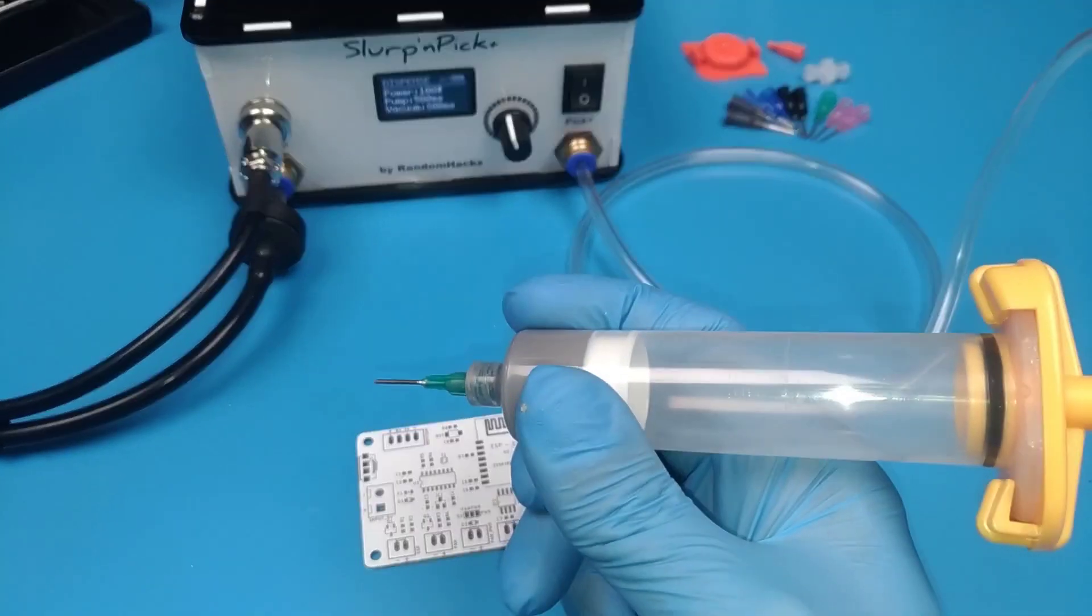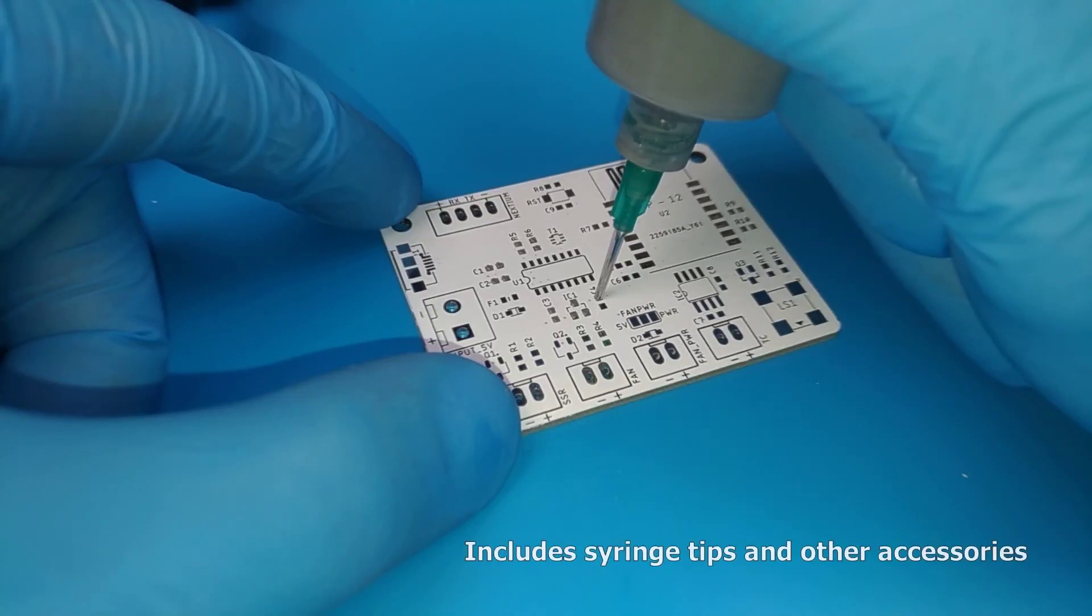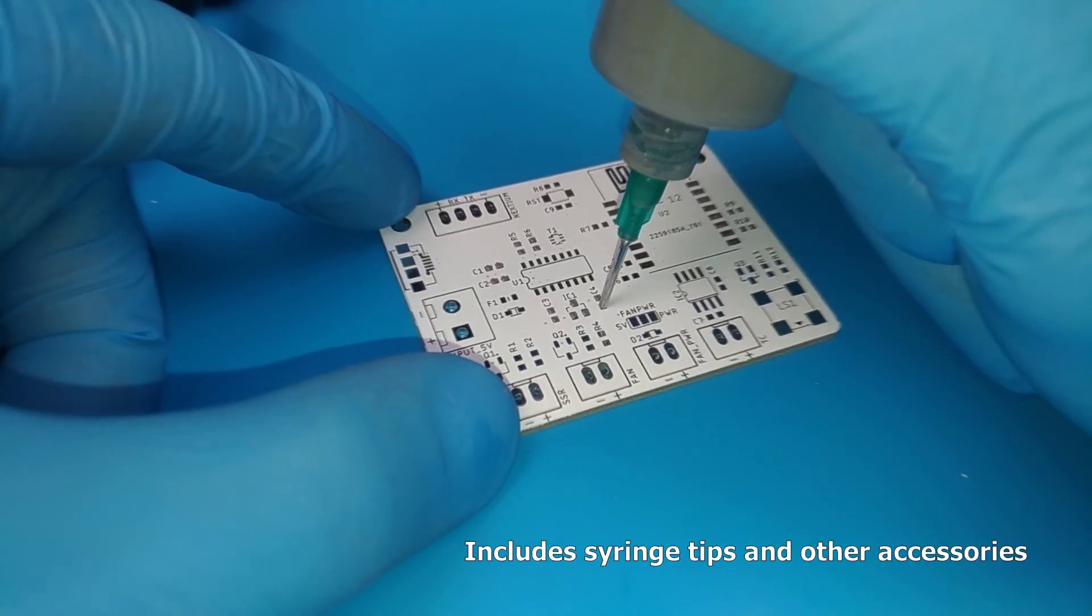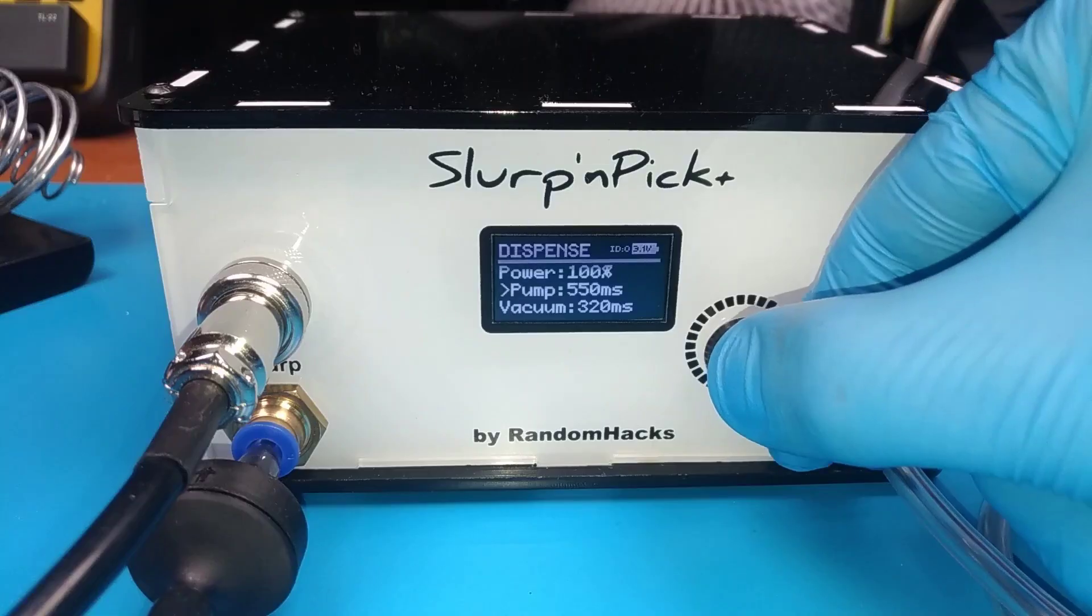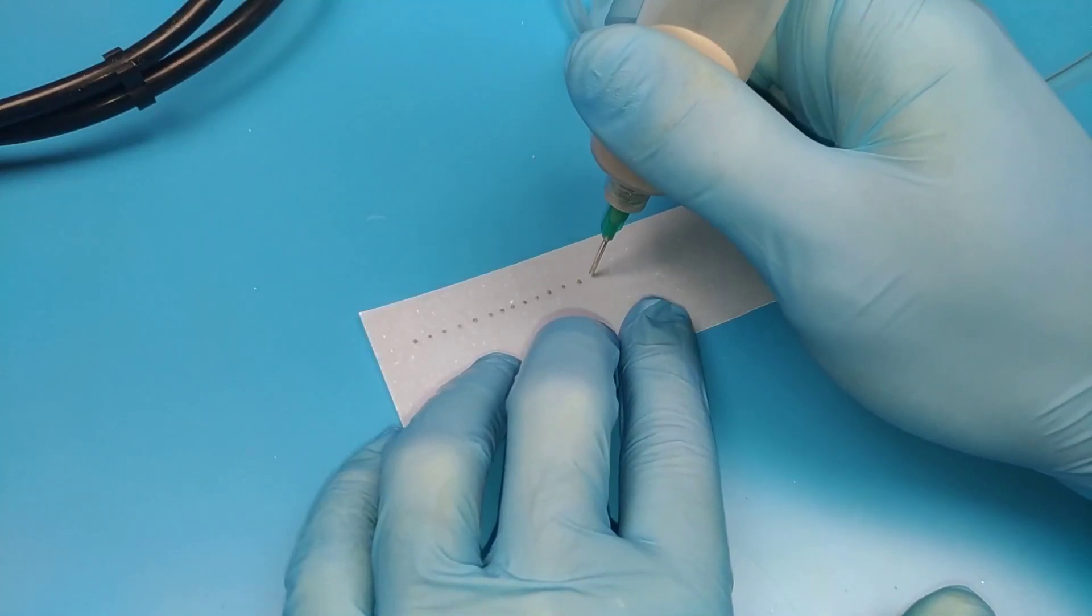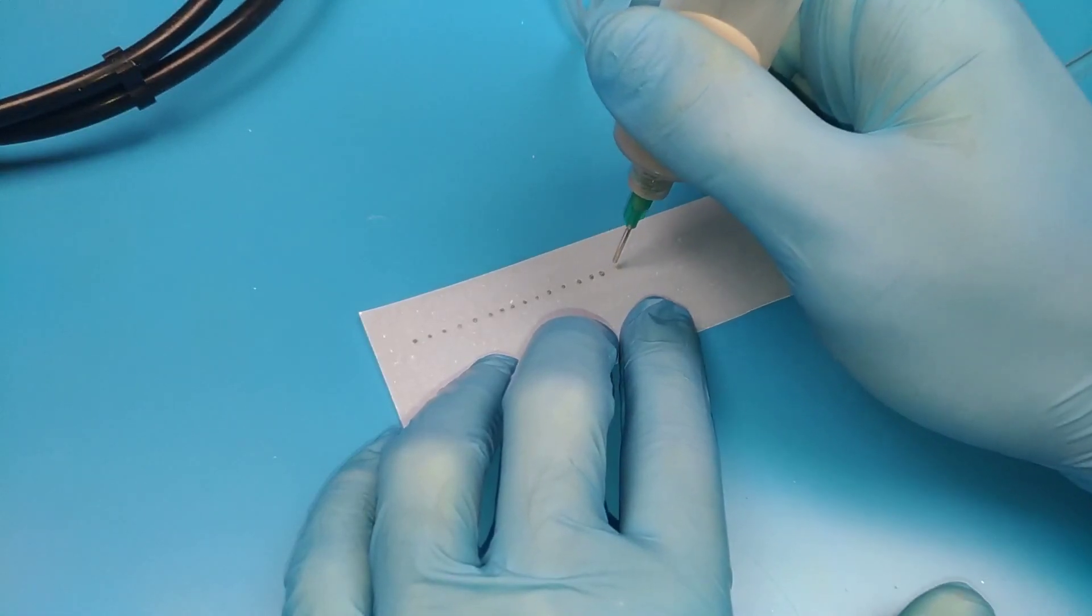With the dispensing feature you can apply precise amounts of solder paste to your PCB prototypes. The power of the pump as well as the dispensing and retraction times are fully configurable, allowing you to fine tune them according to your application.